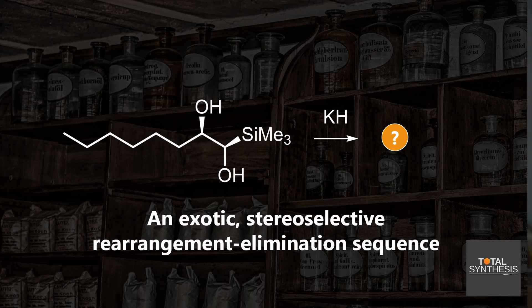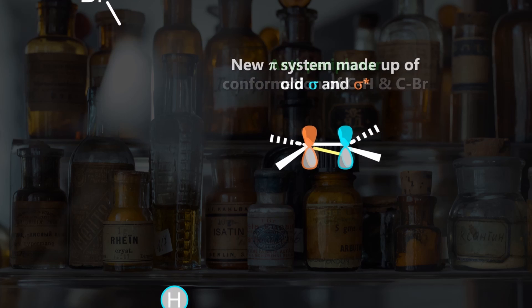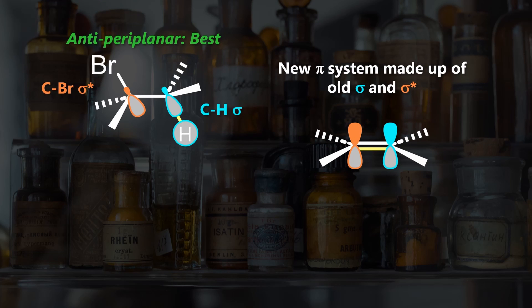The most important thing to know is that E2 reactions preferentially take place from an antiperiplanar conformation. Why is that? We usually draw that deprotonation with base kicks out a leaving group. The pi system forms via overlap of the sigma-CH orbital and the sigma-star orbital of the carbon-bromine bond all within the same plane.